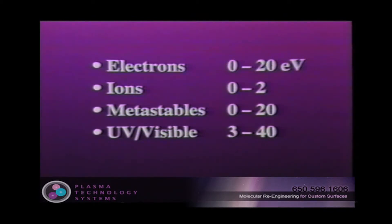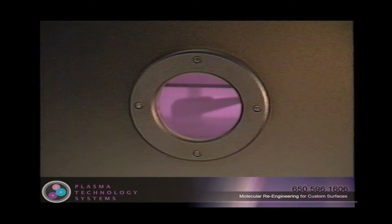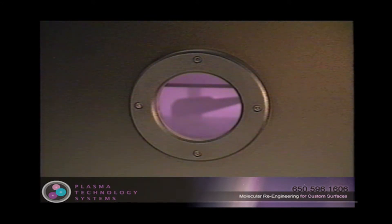The energies available from the activated species in the plasma are sufficient to break these electron bonds. Importantly, this effect takes place to a depth of only several molecular layers. Thus, the basic chemistry of the surface of the polymer can be modified without affecting the bulk properties of the material.